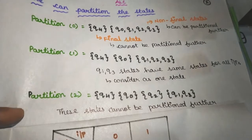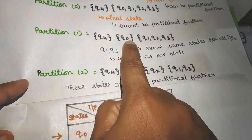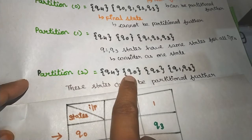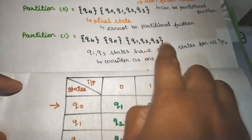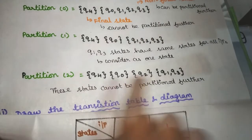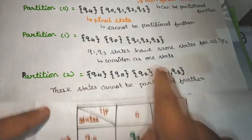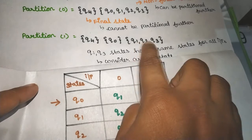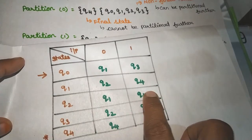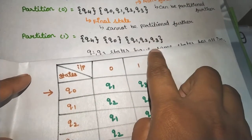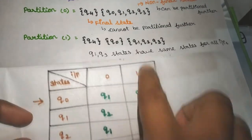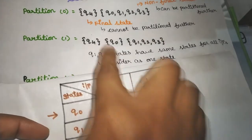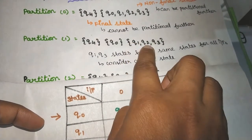If you understand, what we want to do is partition. Q4 is in one set, and the remaining states Q0, Q1, Q2, Q3 are compared. Comparing Q1 and Q2: if Q1, Q2 is equal, then Q3 — there is Q1, Q4, and Q4. The same state is equal to Q1, Q2, and Q3.